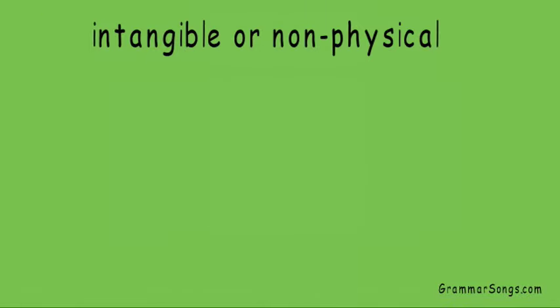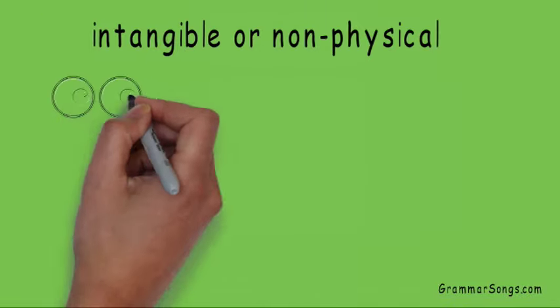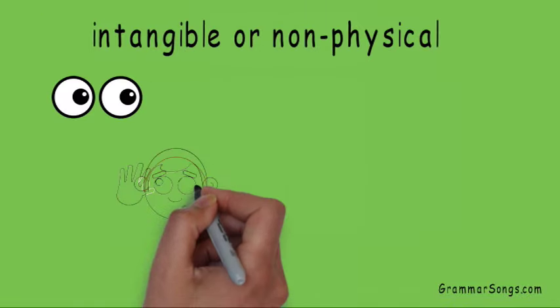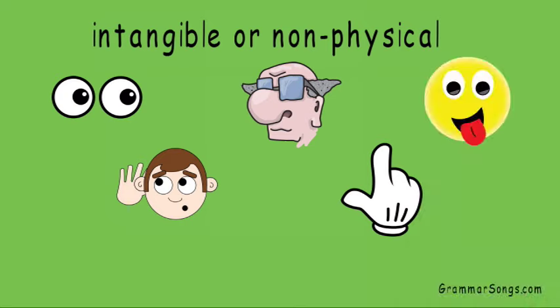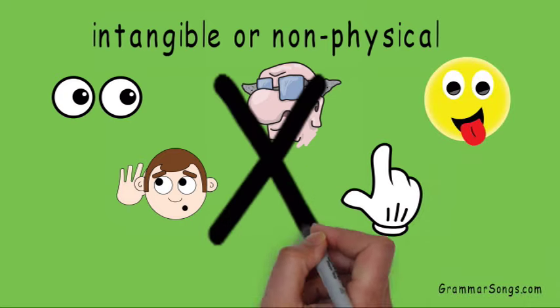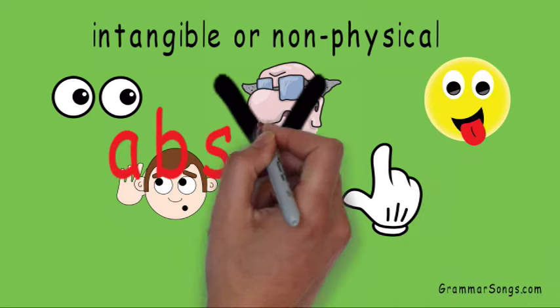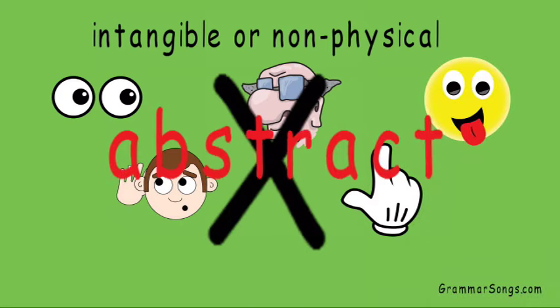Some nouns are intangible or non-physical. You can't see, hear, smell, touch, or taste them. They are abstract. I can't show you what they look like, but I can give you some real world examples.